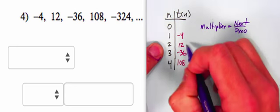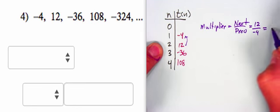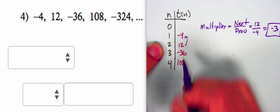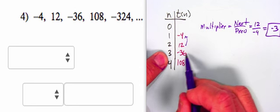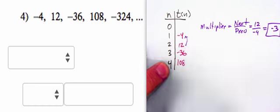In this case, you're 12 divided by negative 4. 12 divided by negative 4, and your answer is negative 3. If you think that's the multiplier, you need to try another pair of numbers, like negative 36 divided by 12. That does also give you negative 3 as well, and so on and so on.